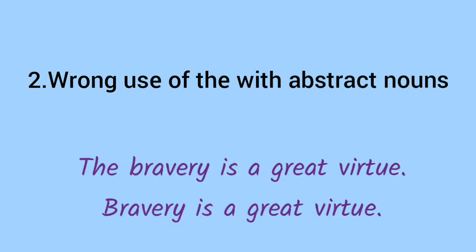Number 2: Wrong use of 'the' with abstract nouns. Abstract nouns kya hota hai? Abstract nouns woh hote hain jinhe hum dekh nahi sakte, jinhe hum sirf feel kar sakte hain, unhe hum touch nahi kar sakte. Is ke upar meine already ek video banai hui hai jise aap dekh sakte hain — uska link description mein share karungi.